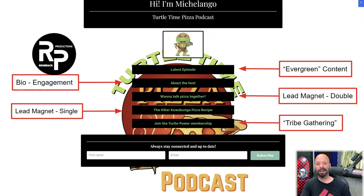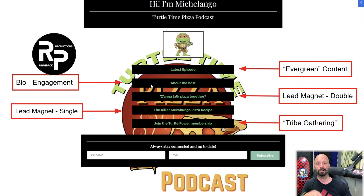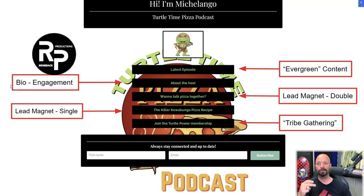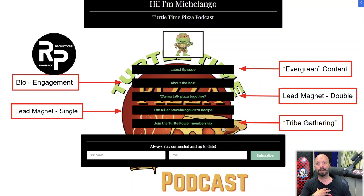Hopefully your website has that — if not, I highly recommend Kajabi. We'll get to that in a moment. So what do we have so far? We have our five links on this landing page, which is called a link in bio. One of the links is your evergreen content — that's the latest episode constantly updating. Your second link is about the host — a bio page about you that gives engagement. Your audience gets a little glimpse behind the screen about who the hosts are, and it makes them want to be part of the show because they know you on a personal level.